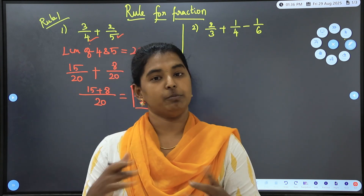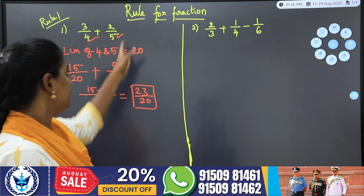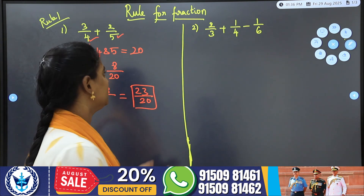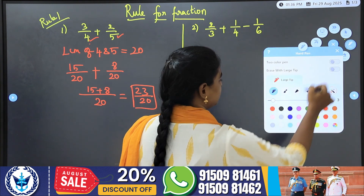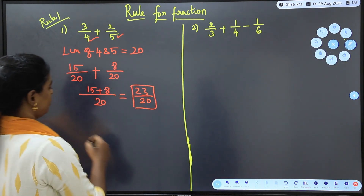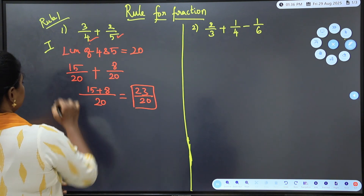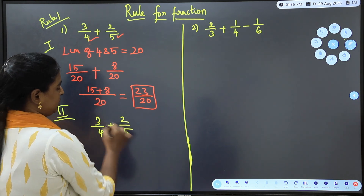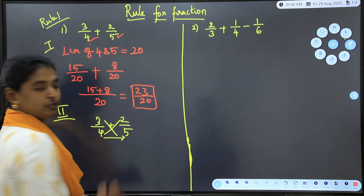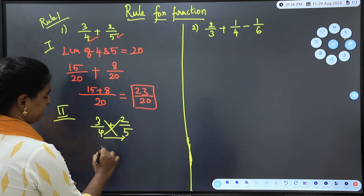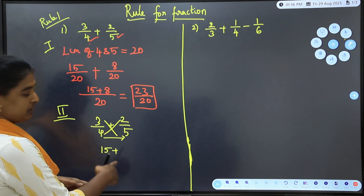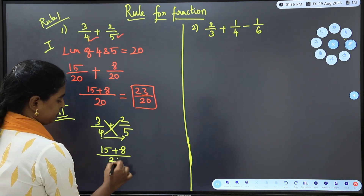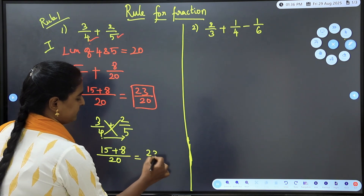When there is an addition or subtraction sign between two or more fractions, you can use the LCM method or the Butterfly method. The Butterfly method is simply cross multiplication. For 3/4 + 2/5: cross multiply — 3×5=15 and 4×2=8, then multiply the denominators 4×5=20 — giving 23/20.